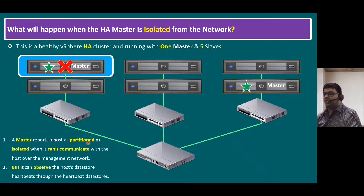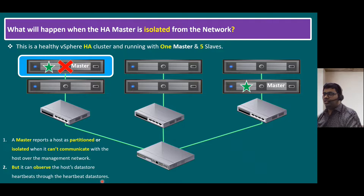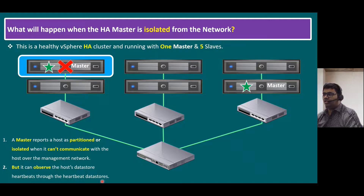A master reports the host as partitioned or isolated when it cannot communicate with the host over the management network, but it can observe that host's data store heartbeats through the heartbeat data store. In some scenarios, virtual machines still run on the same master host — they won't migrate and restart on another host, because they still run on the same ESXi host. But immediately when the master loses communication with the FDTM agents or secondary hosts, it will elect a new master among the associated hosts.